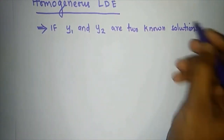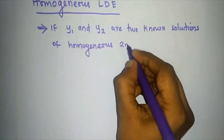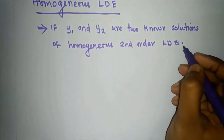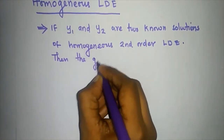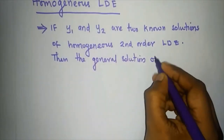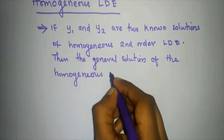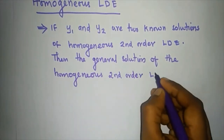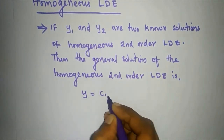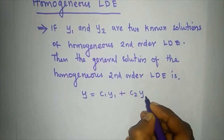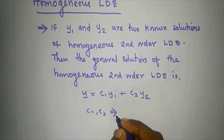If y1 and y2 are two known solutions of a homogeneous second order linear differential equation, then the general solution is y = c1·y1 + c2·y2, where c1 and c2 are two arbitrary constants.